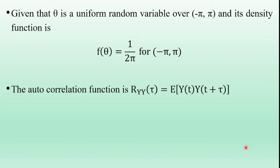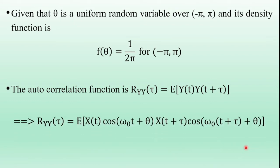We know that the autocorrelation function of Y(t) is R_Y(τ) = E[Y(t)·Y(t+τ)]. From the modulated waveform, Y(t) = X(t)·cos(ωₒt + θ). Substituting, the RHS becomes E[X(t)·cos(ωₒt + θ)·Y(t+τ)]. Replacing t with t+τ in Y(t) gives Y(t+τ) = X(t+τ)·cos(ωₒt + ωₒτ + θ).